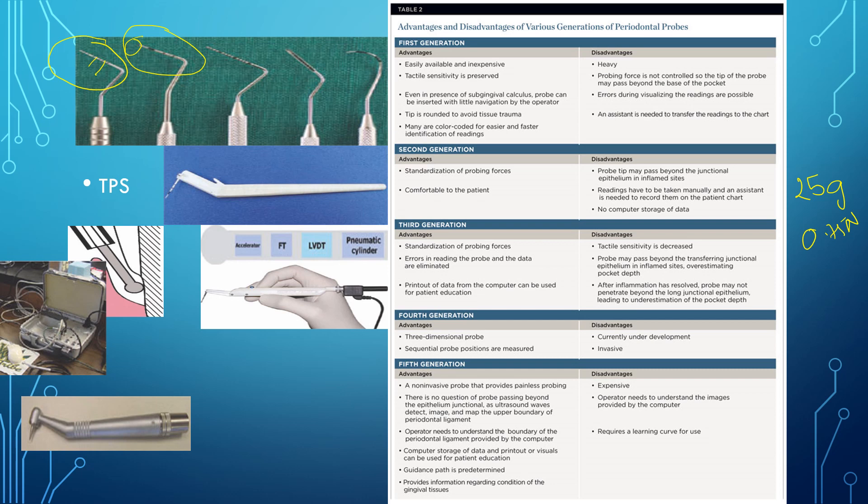Then we can see this is a UNC-15 probe. The UNC over here stands for University of North Carolina. Here the calibrations are from 0 to 15, and the markings are from 1 to 15. Specifically, there are stops or the markings which are color coded at 5, 10, and 15 which you can see in UNC-15 probe.